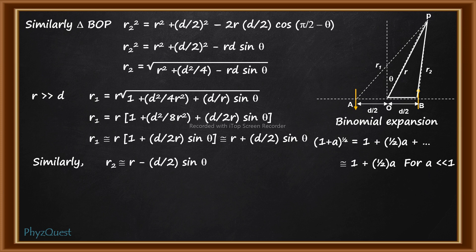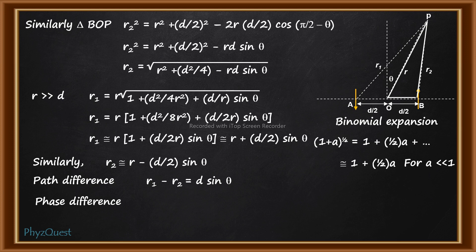With the values of r1 and r2 found, the path difference is r1 − r2 = d sin θ.